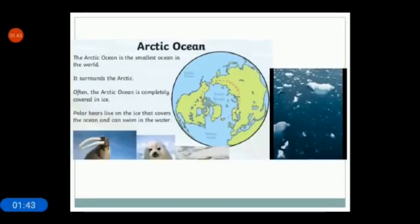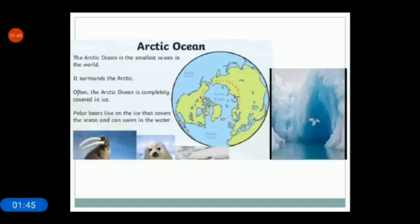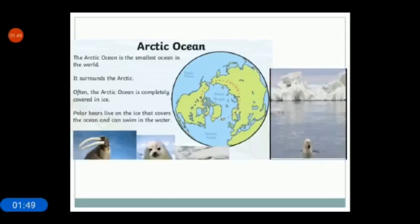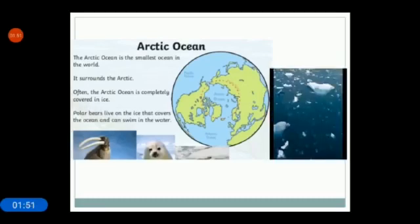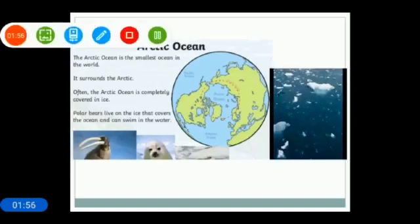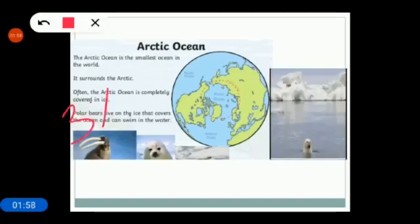Now, Arctic Ocean. The Arctic Ocean is the smallest ocean in the world. It surrounds the Arctic. Often, the Arctic Ocean is completely covered in ice. Polar bears live on the ice that covers the ocean and can swim in the water. And it covers 3% of the earth's surface.